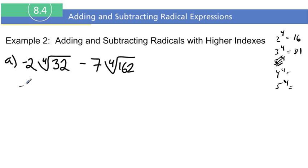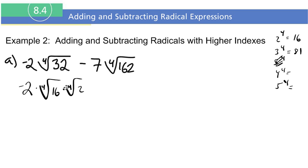So we have negative two times the fourth root of 16 times the fourth root of 2, because 16 times 2 is 32. One of these numbers has to be a perfect fourth root — whatever the index is, those are the powers you're looking at. In this case we're looking at fourth powers.